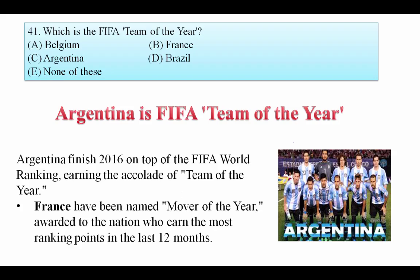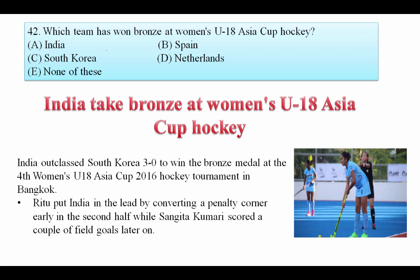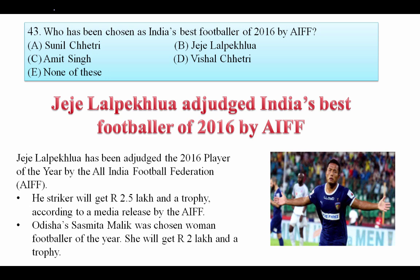Now let's see some sports news. Which is the FIFA Team of the Year? Argentina finished 2016 on top of the FIFA world ranking and was named Team of the Year. France was named Mover of the Year for earning the most ranking points in the last 12 months. Which team won bronze at the Women Under-18 Asia Cup Hockey? India took bronze at Women Under-18 Asia Cup Hockey. Who has been chosen as India's best footballer of 2016 by AIFF? Jeje Lalpekhlua has been adjudged the 2016 Player of the Year by the All India Football Federation, receiving rupees 2.5 lakh and a trophy. Odisha's Sasmita Malik was chosen as Woman Footballer of the Year, receiving rupees 2 lakh and a trophy.